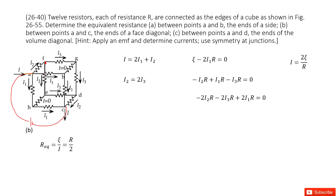Now we apply Kirchhoff's loop rule. The first loop with the battery gives: epsilon minus I1·R minus I1·R equals zero. The second loop on the top surface gives: minus I2·R, minus I3·R, plus I1·R equals zero. The current I1 and the loop are in opposite directions, so that term is positive.